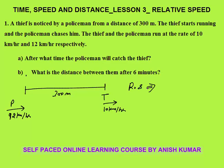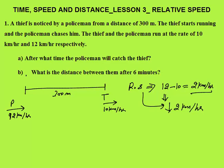What is the relative speed? Two objects are moving in the same direction, so relative speed is speed of faster minus speed of slower — that is 2 km per hour. The meaning of relative speed: increase or decrease in gap per unit time. By common sense, the gap is reducing because the policeman is faster than the thief. The gap is reducing at a speed of 2 km per hour. When will the policeman catch the thief? Time = distance divided by speed. We need to reduce the gap of 300 meters, and the gap is reducing at 2 km per hour.